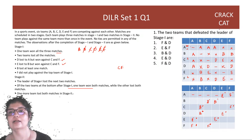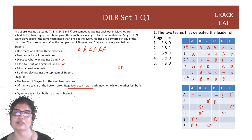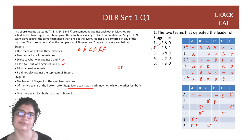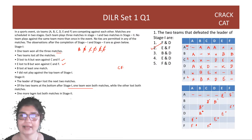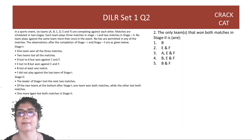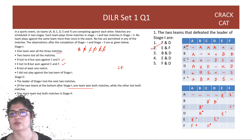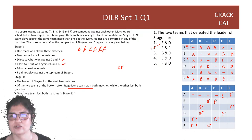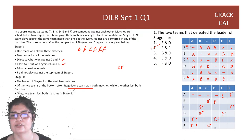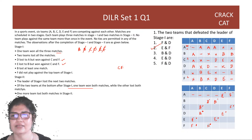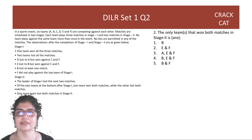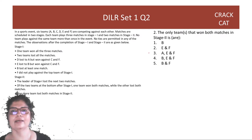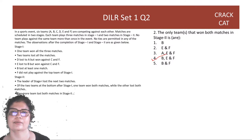Questions: The two teams that defeated the leader of stage 1 — A played E and F in stage 2, and was defeated by E and F. Answer: second option. The only teams that won both stage 2 matches: looking row-wise, B won both, E won both, and F won both. Answer: fourth option — B, E and F.